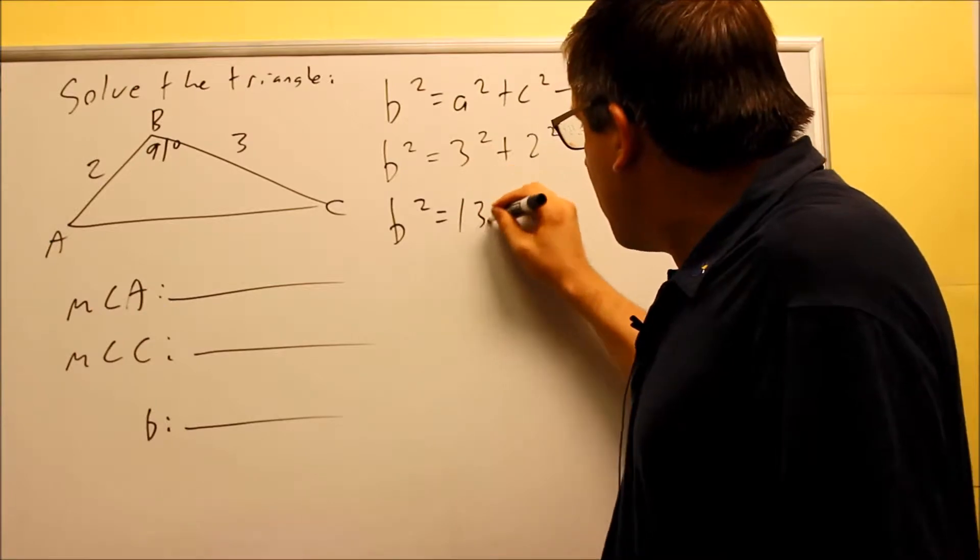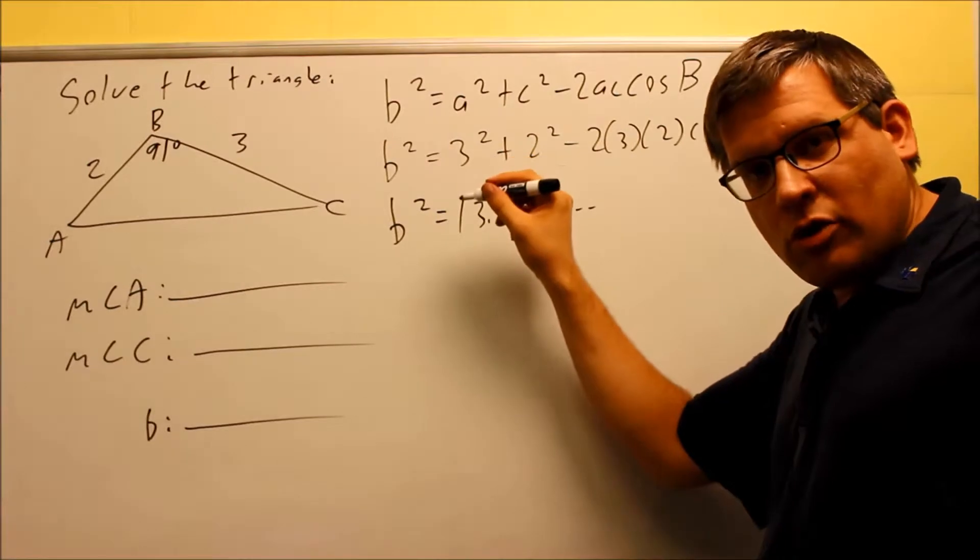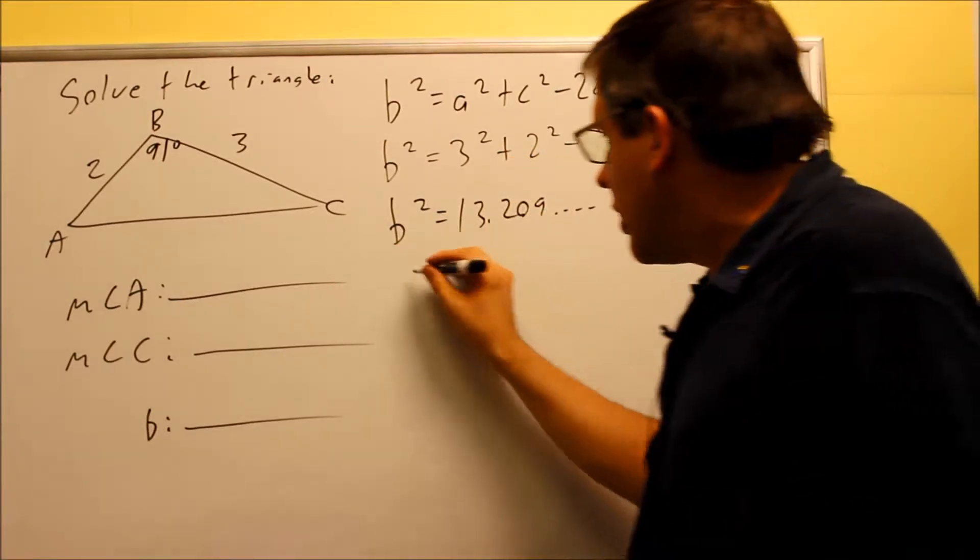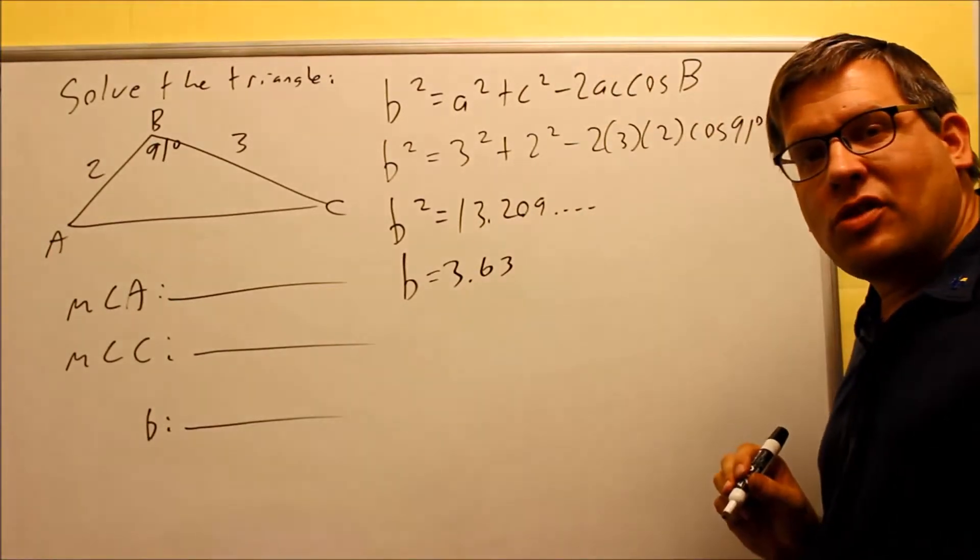And when you do, you get 13.209 with some more decimals that come after that. Don't forget to take the square root because it's b² equals and you want to get B by itself. So if you do that, you're going to get 3.63.